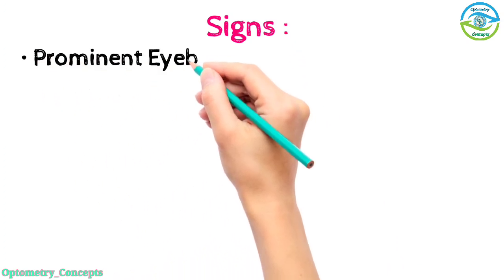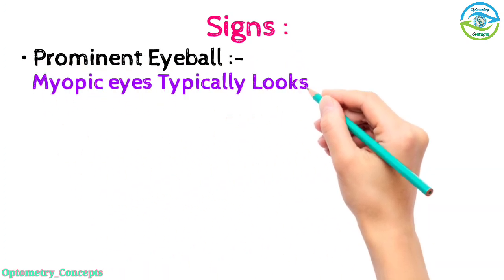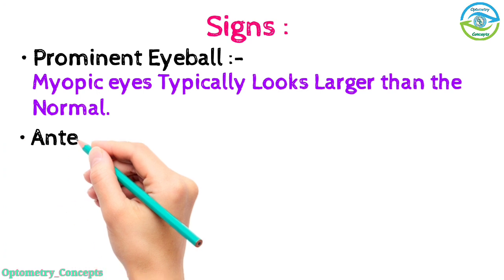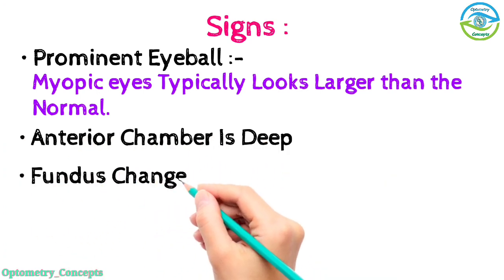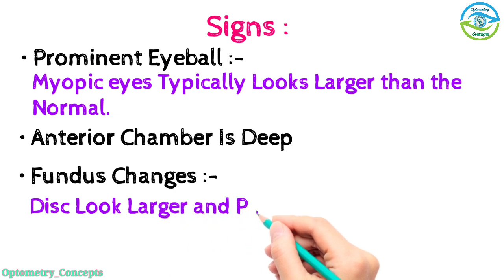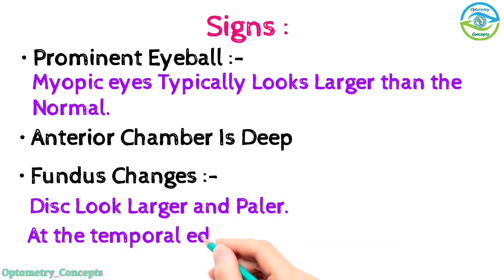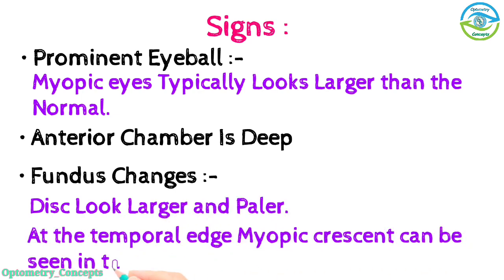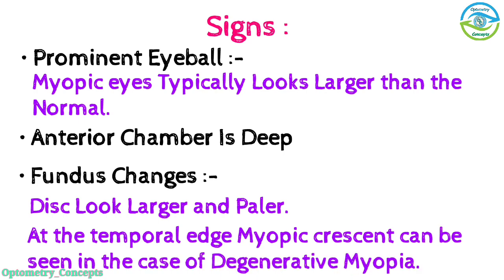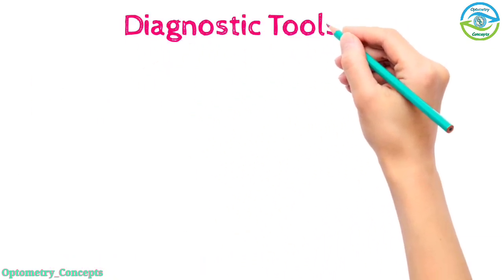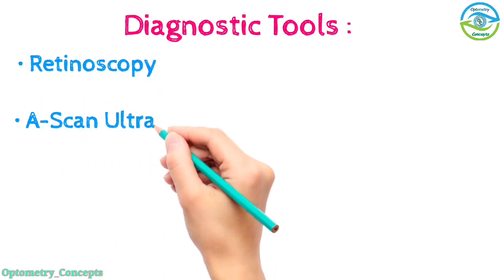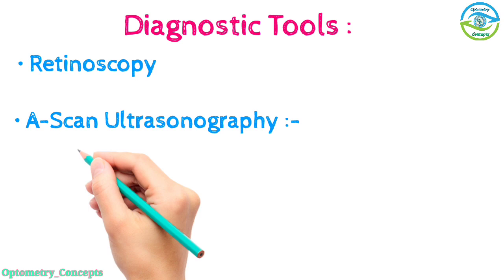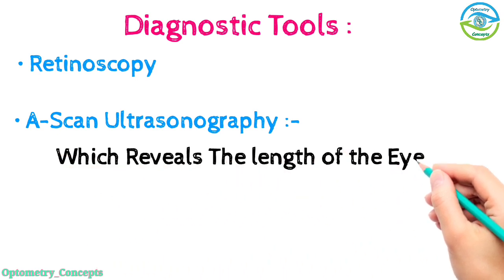Signs: prominent eyeball - myopic eyes typically look larger than normal; anterior chamber is deep; fundus changes such as disc looks larger and paler; at the temporal edge, myopic crescent can be seen in the case of degenerative myopia. Diagnostic tools such as retinoscopy and A-scan ultrasonography which reveals the length of the eyeball.